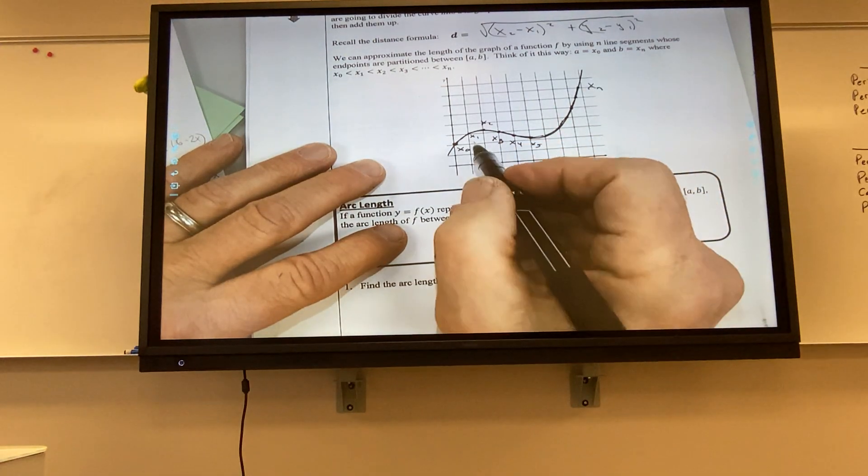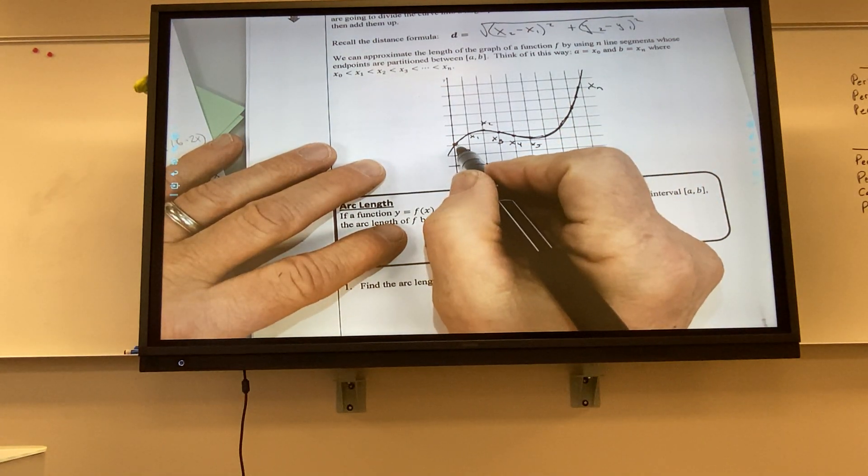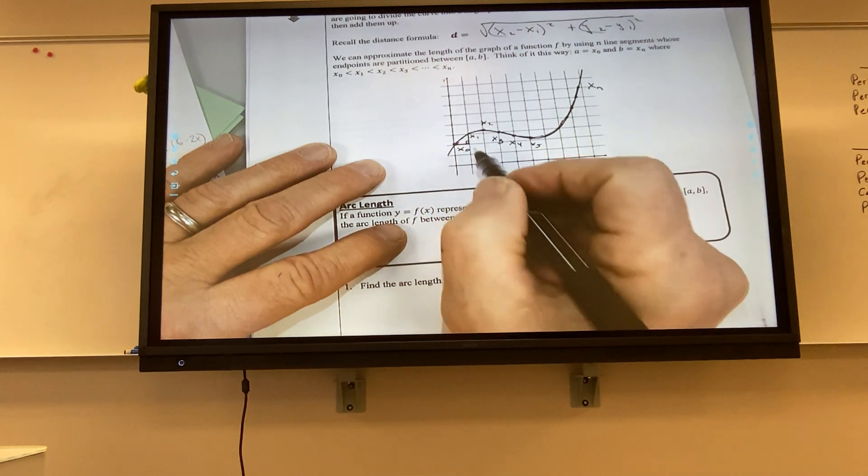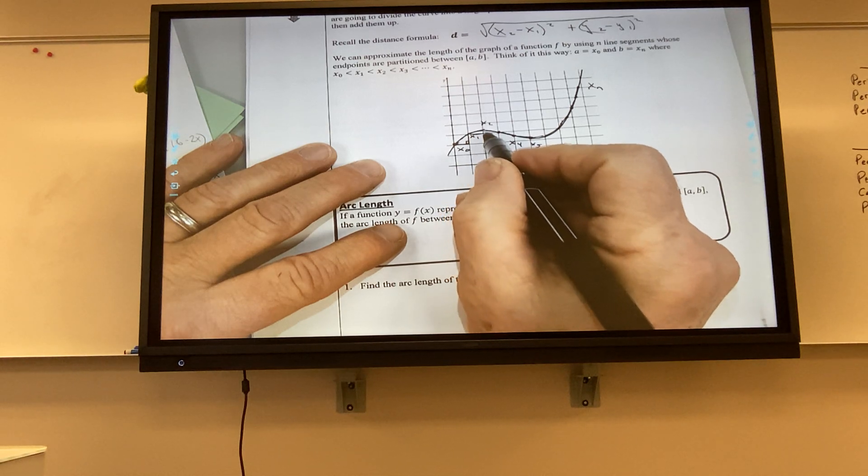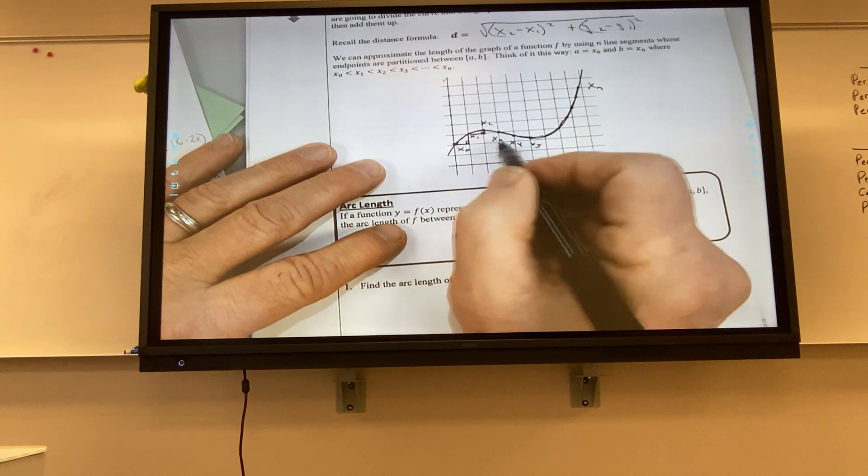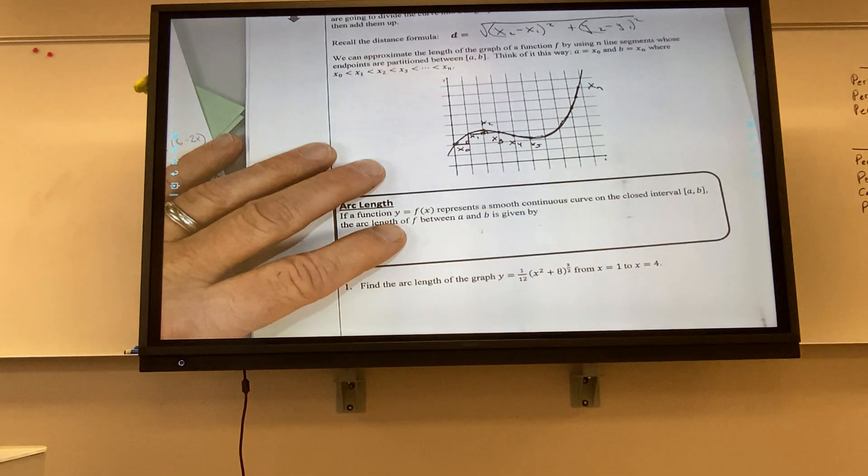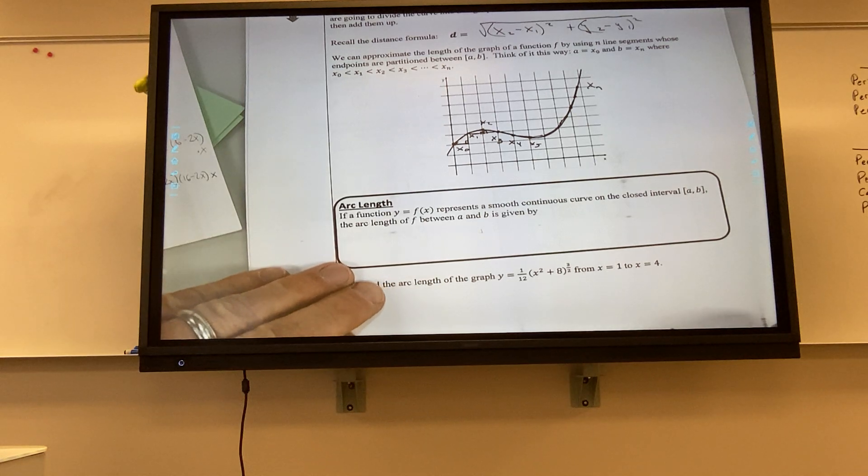So like there would be a little right triangle right here. So you would figure out the distance between those two. And right here there's a little right triangle. You would figure out the distance between those two. And right here there's a little right triangle. You would figure out the distance between those two. Is that kind of making sense to everybody?